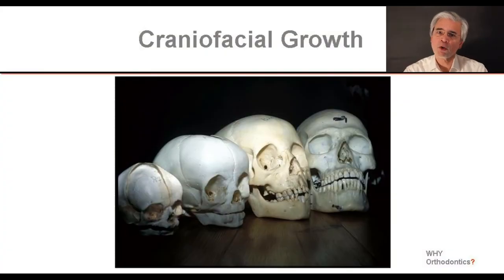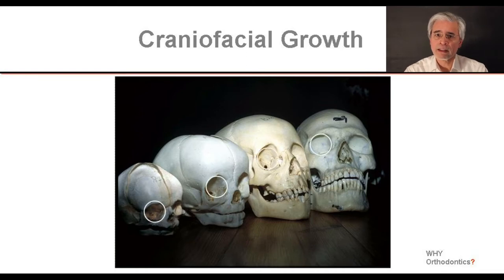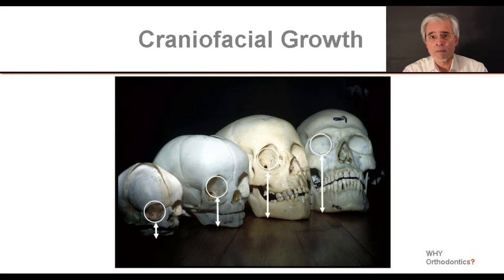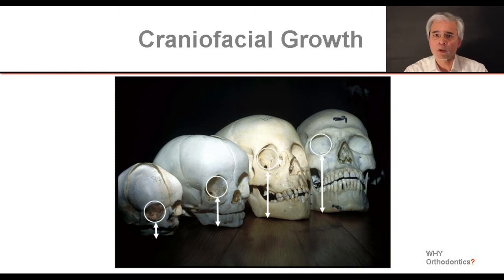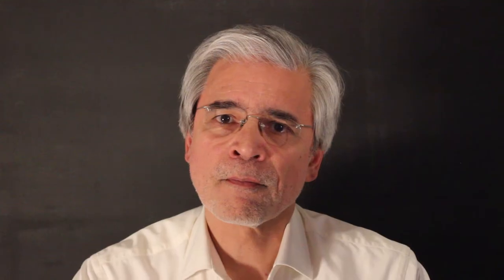While some parts do not grow much at all — for example the eye sockets — it is exactly the area under the eyes that grows significantly. This is where orthodontics, as the name implies not in English but in German for example, takes place. It is called craniofacial orthopedics in German, not just orthodontics as it is called in English. To be more precise we should call it orthodontics and craniofacial orthopedics, also in English.